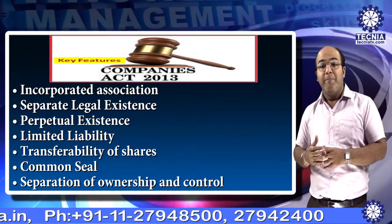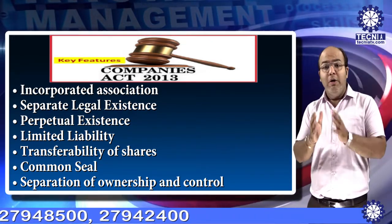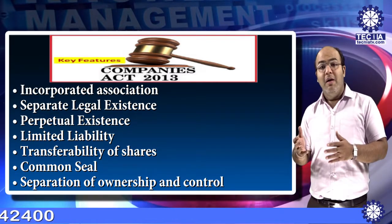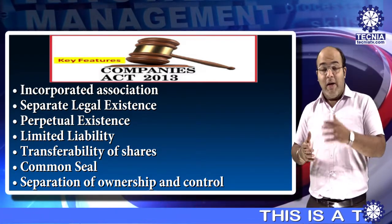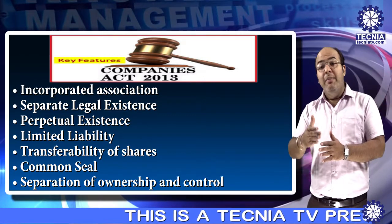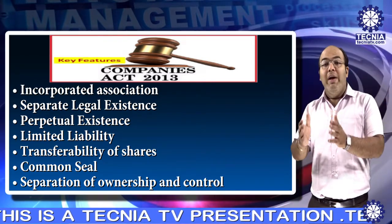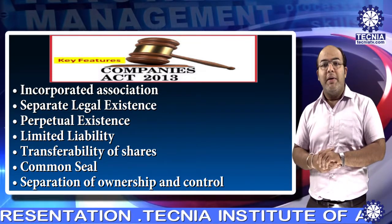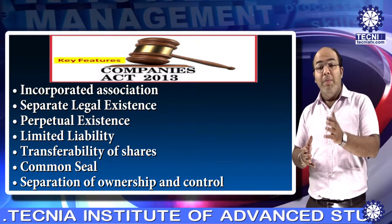Third, perpetual existence. Death, insolvency, insanity, or change of members has no effect on the life of a company. It can come to an end only through the prescribed legal procedure or legal formalities according to the Company Act — through the winding up process.